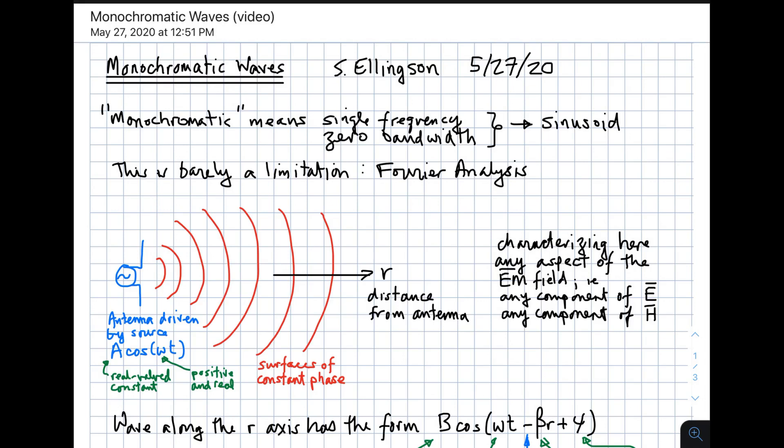Hi, welcome to a lecture on monochromatic waves. Here by waves we're talking about radiofrequency waves specifically, but this is of course true for other types of waves. By the term monochromatic, we mean a wave which consists of a single frequency and zero bandwidth, which is a fancy way of saying a sinusoid.